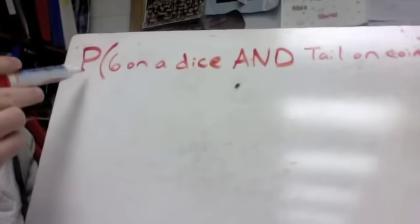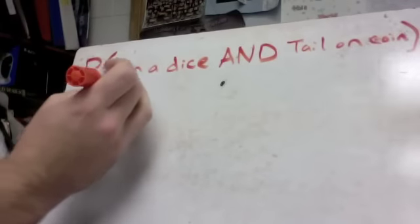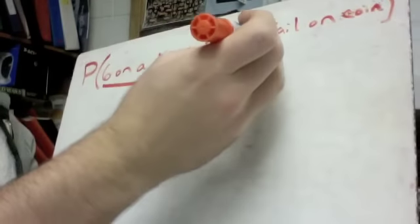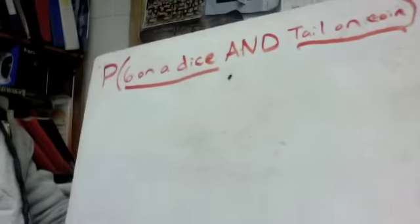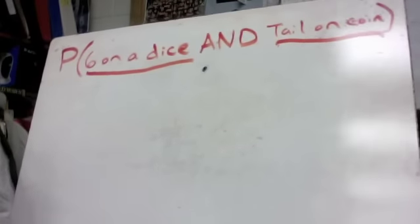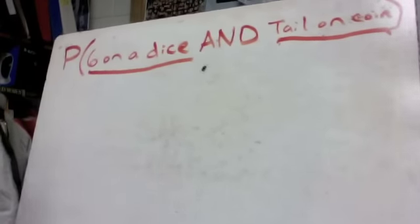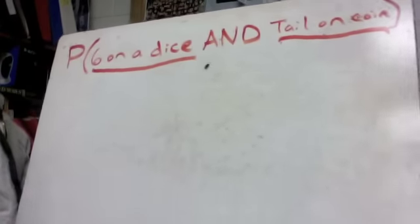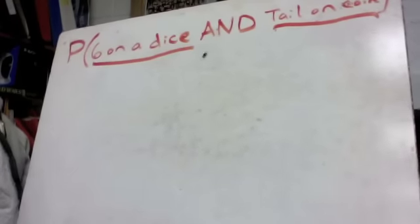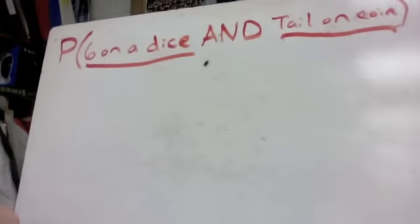The first example is the probability of two separate things: getting a six on a dice and right afterwards flipping a tail on a coin. We're going to figure out the actual probability of that, and it's pretty simple. All you need to do is find the chances of each one happening and then multiply them together.